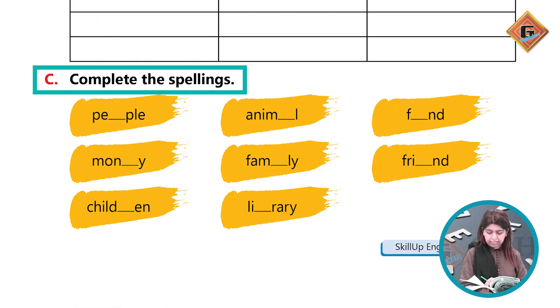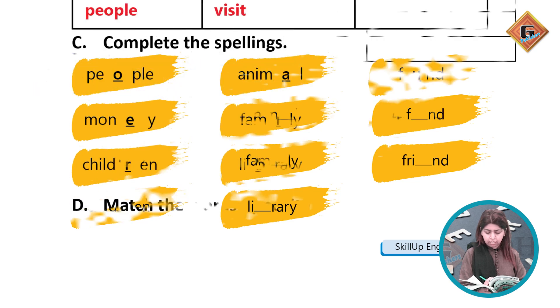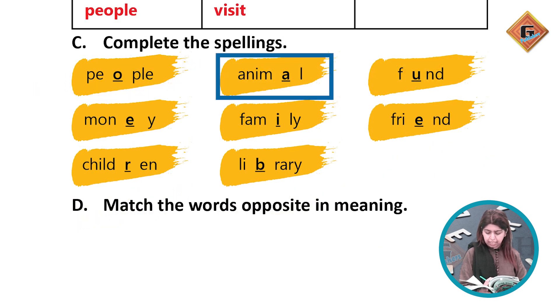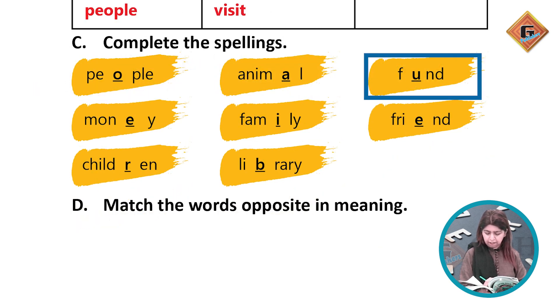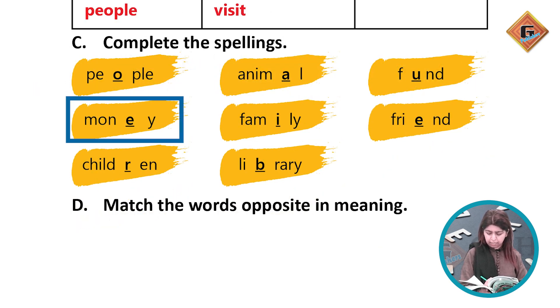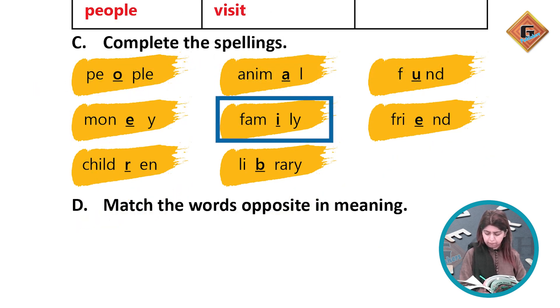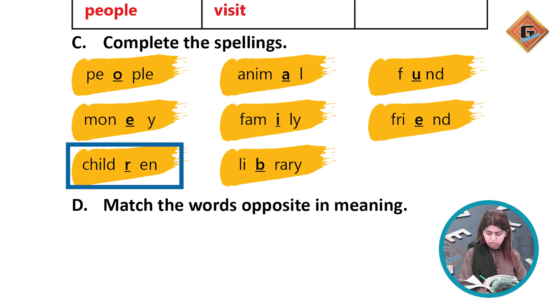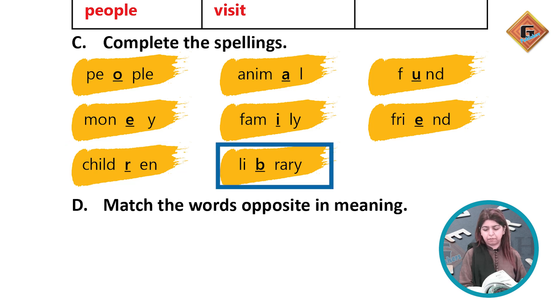Now complete the spellings: people, animal, fund, money, family, friend, children, library.